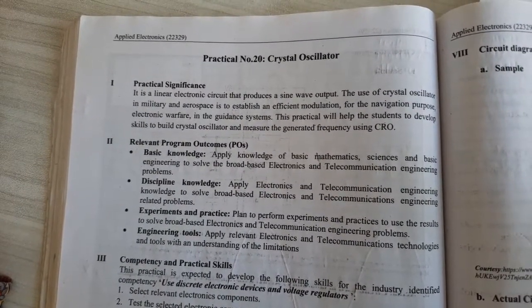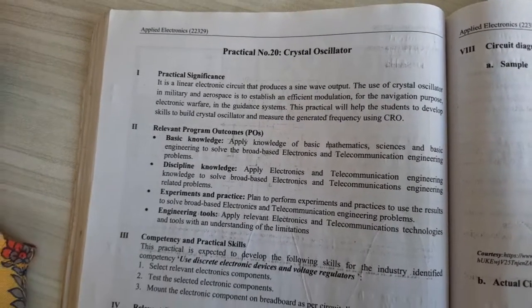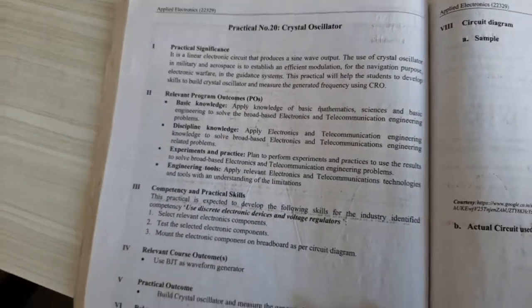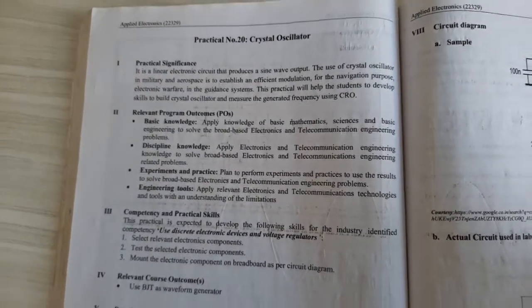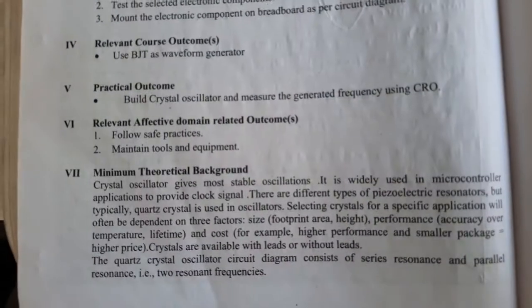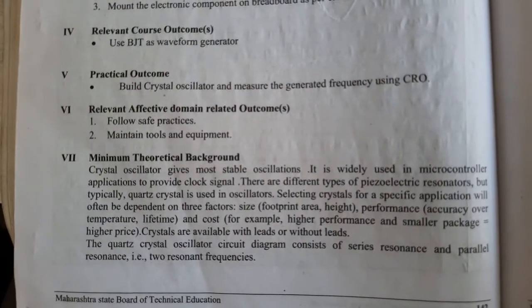The use of crystal oscillator in military and aerospace is to establish efficient modulation, also for navigation purposes, electronic warfare, and guidance systems. We will see how the crystal oscillator works and how it generates frequency using CRO. A crystal oscillator gives more stable oscillations.